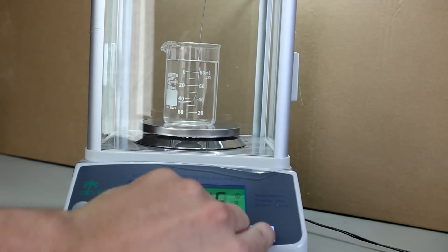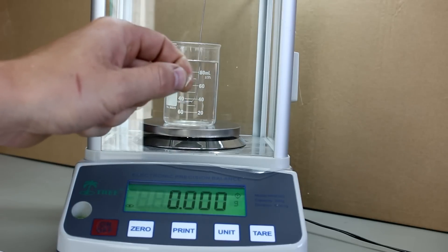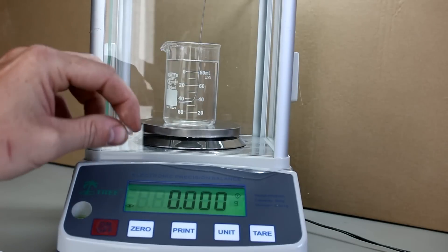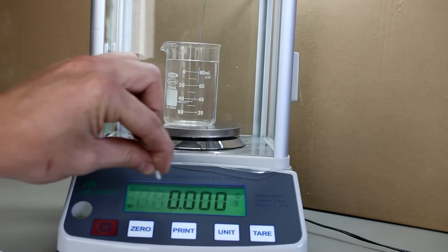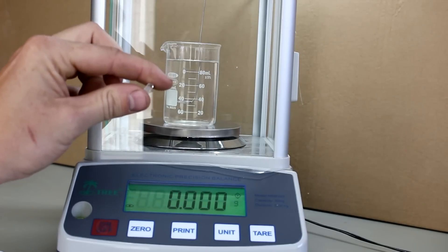Now if I zero this out I can now add something to the wire and measure the amount of buoyant force on the object. Now since I'm using water the number of grams should correlate to the number of cubic centimeters that this object displaces.